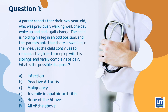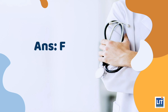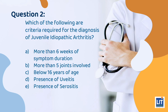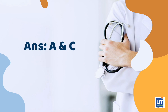Quiz time. Question 1: A parent reports that their 2-year-old child, who was previously walking well, one day woke up and had a gait change. The child is holding his leg in an odd position, and the parent notes swelling in the knee, yet the child remains active, tries to keep up with his siblings, and rarely complains of pain. What is the possible diagnosis? The answer is F — all of the above. Question 2: Which of the following are criteria required for the diagnosis of juvenile idiopathic arthritis? The answer is both A and C.